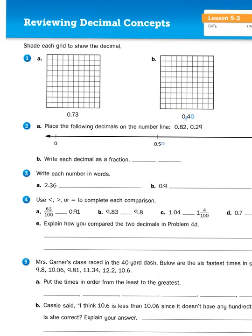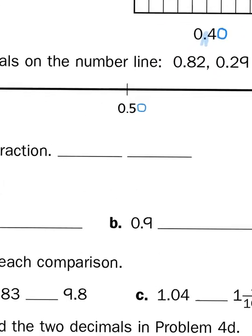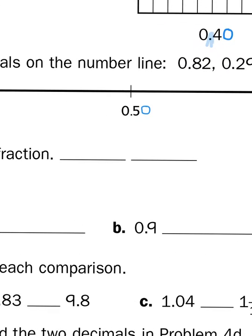Write each decimal as a fraction. So if 82 hundredths is a fraction, I would write it like this: 82 over 100. That's what this is in fractional form. These two values are the same, they're just being represented differently.